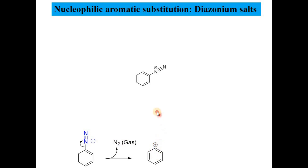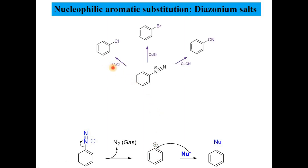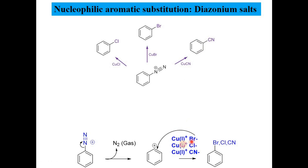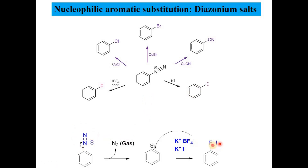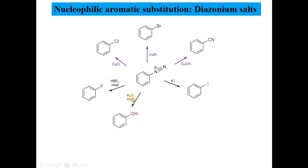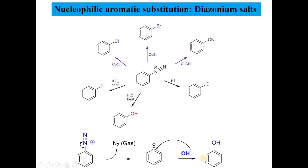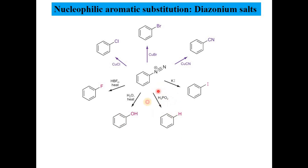Different nucleophiles give different products from the diazonium salt: copper chloride produces the chloride ion giving chlorobenzene, copper bromide gives bromobenzene, and copper cyanide gives the nitrile (benzonitrile). Fluoroborate reacts with the diazonium salt to produce fluorobenzene, and potassium iodide gives iodobenzene. Water, though a very weak nucleophile, can also displace the nitrogen to produce phenol. Metaphosphoric acid, also a weak acid, can react with the diazonium salt to produce benzene itself.